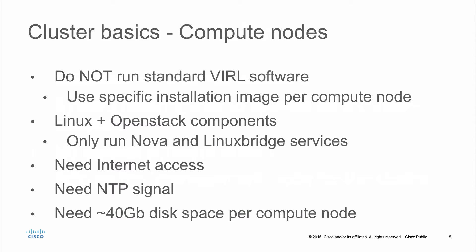On each compute node, it's standard Linux — Ubuntu — and on top of that, KVM for running virtual machines and some OpenStack components. Only two OpenStack services run on compute nodes: Nova and Linux Bridge. The compute nodes do need internet access and a valid NTP signal. Depending on your installation environment, you may need to work with your lab team to determine the appropriate NTP source and proxy configuration. The compute nodes also require disk for caching virtual machine disk images — we recommend at least 40 GB available on each compute node.